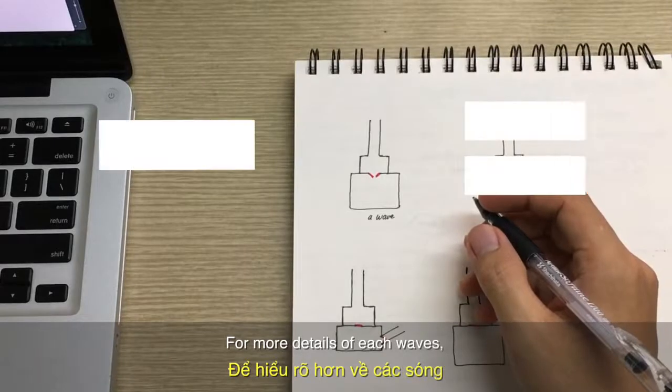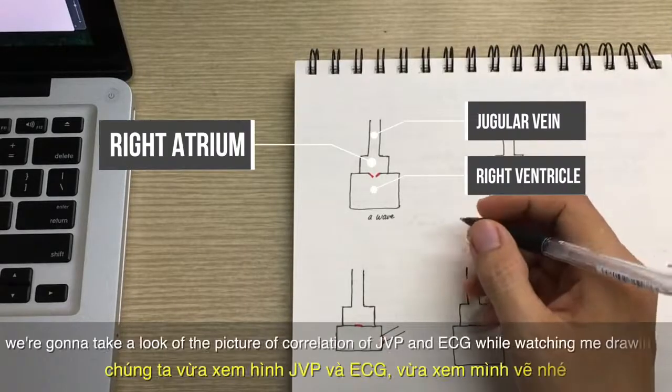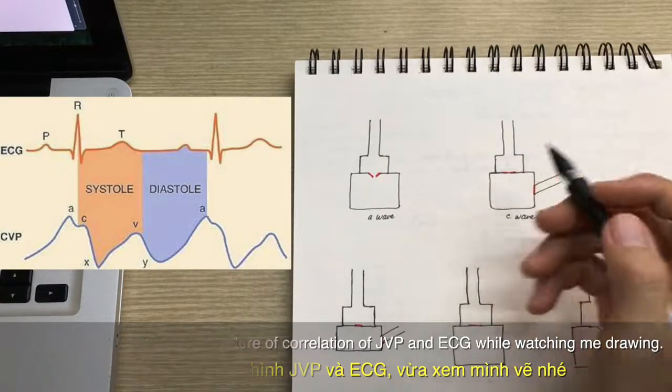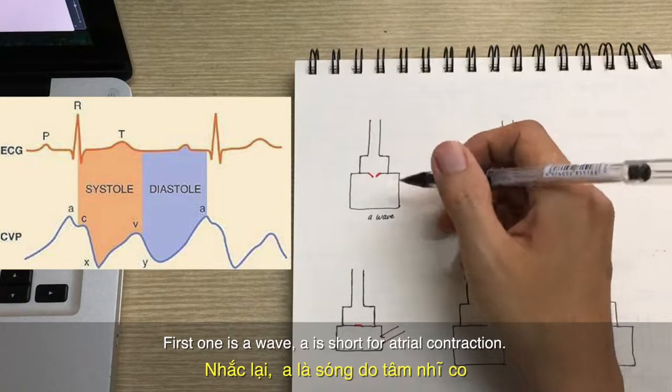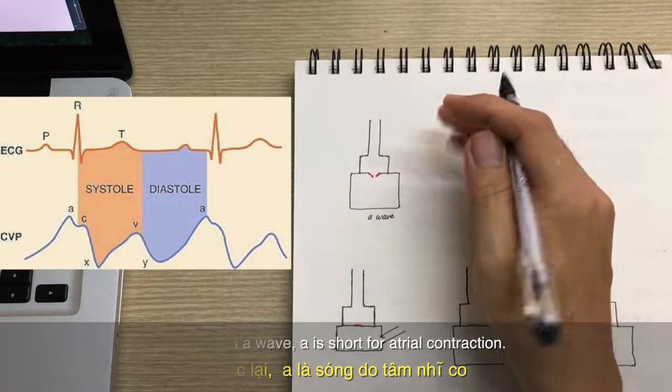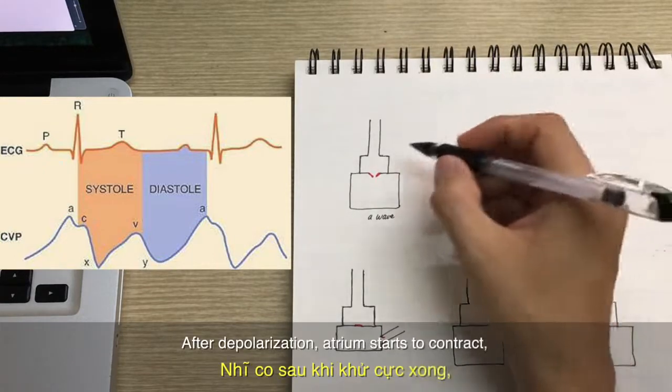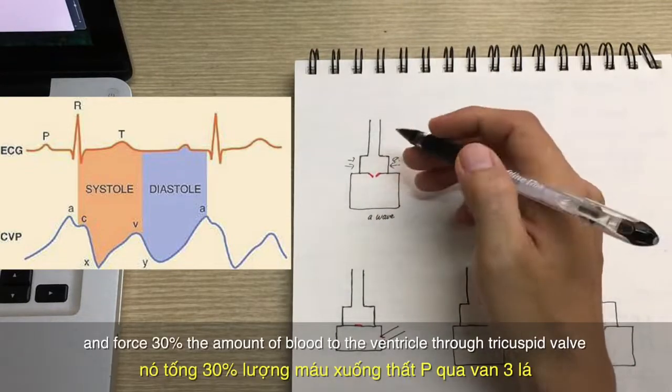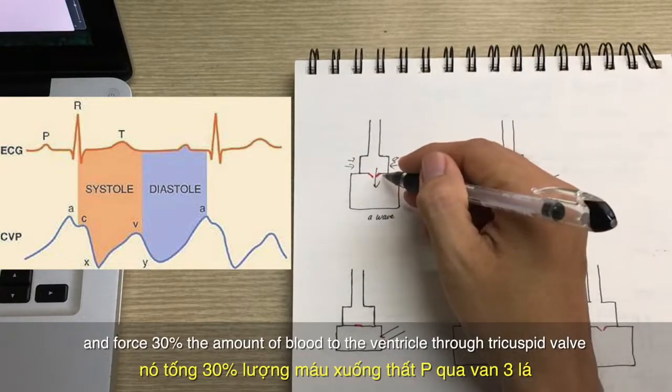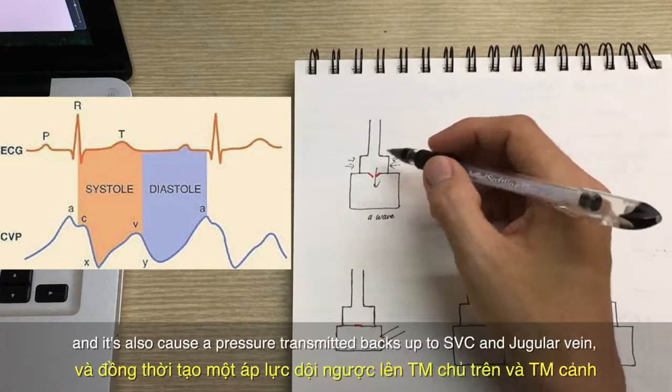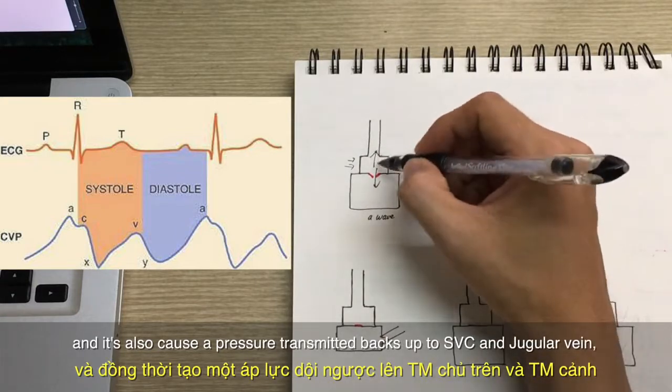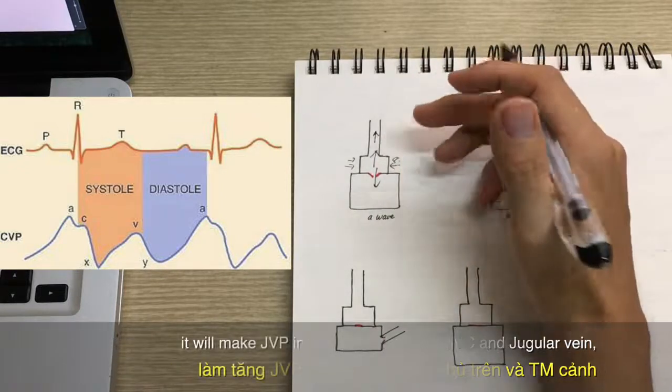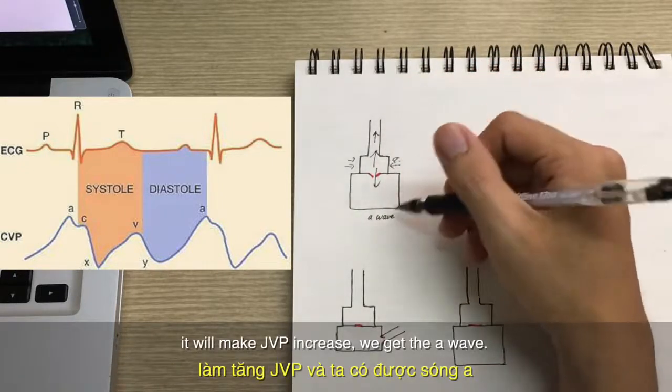Okay, for more details of each wave, we're gonna take a look at a picture of correlation of JVP and ECG while watching me drawing. The first one is A wave. A is short for atrial contraction. So after depolarization, the atrium starts to contract and forces 30% of the amount of blood to the ventricle through the tricuspid valve. And this also causes a pressure transmitted back up to the SVC, superior vena cava and jugular veins. So it will make the JVP increase, and we get the A wave.